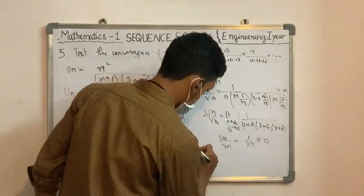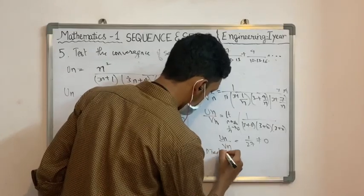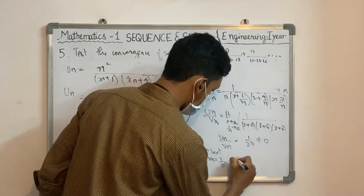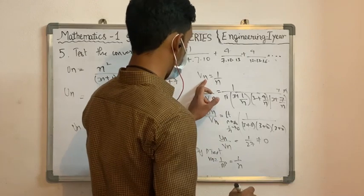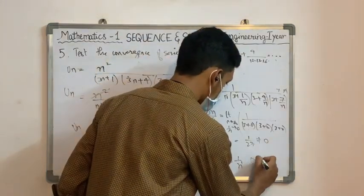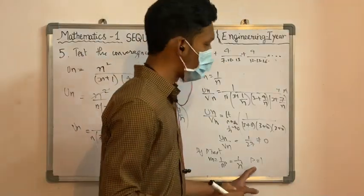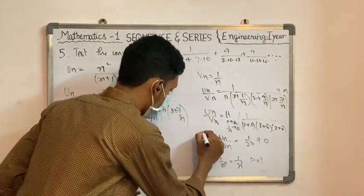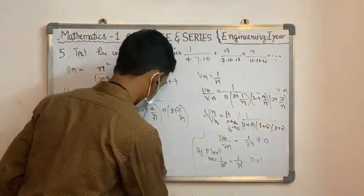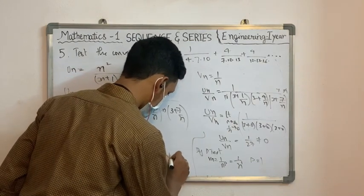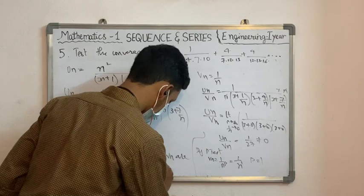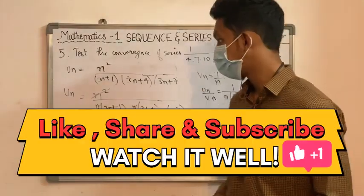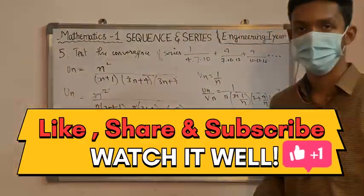Since the limit is finite and nonzero (1/27 ≠ 0), we apply the p-test. Here Vn = 1/n = 1/n^1, so t = 1, which means t ≤ 1. Therefore both Un and Vn are divergent. Hence the given series is divergent.